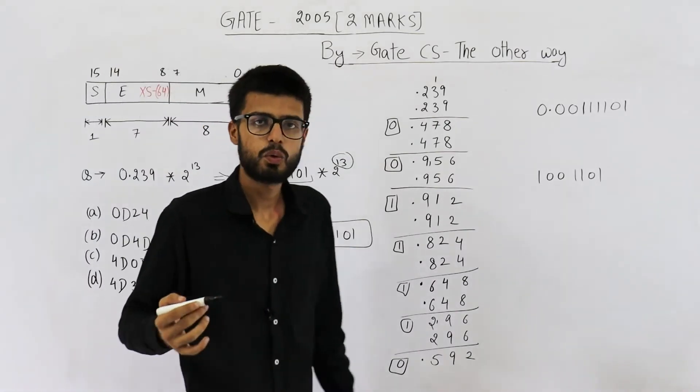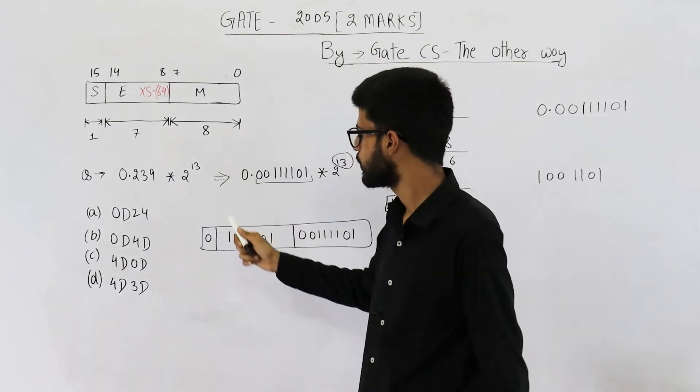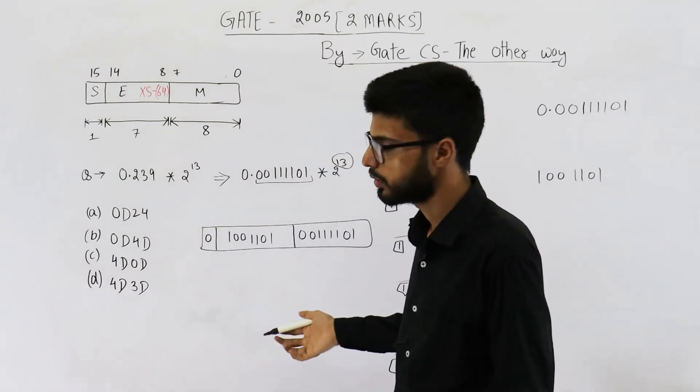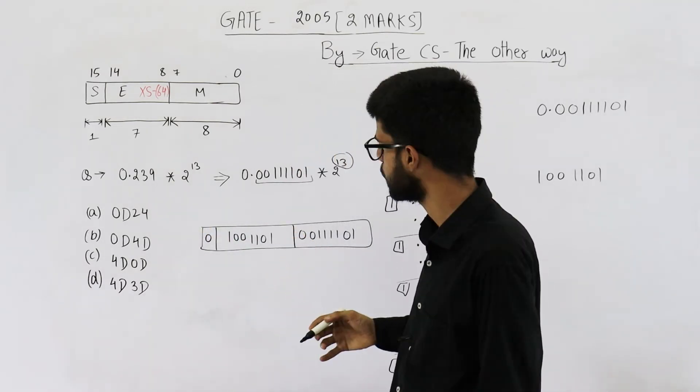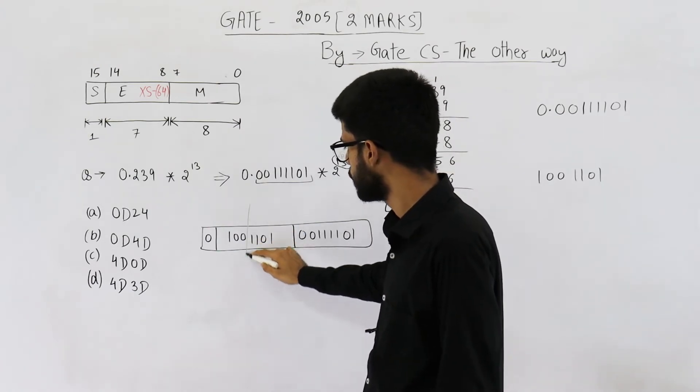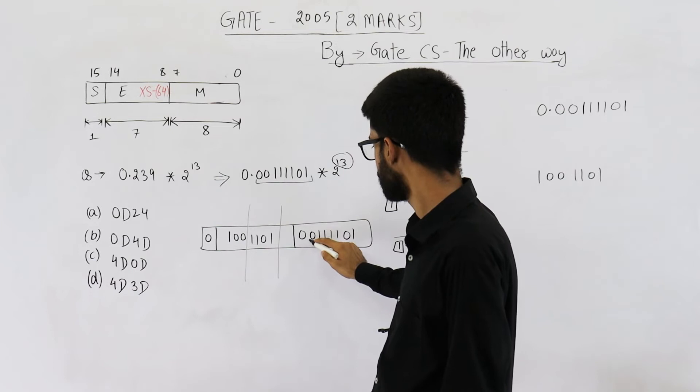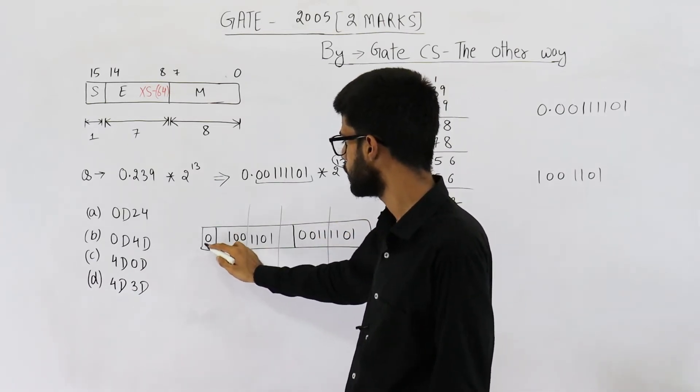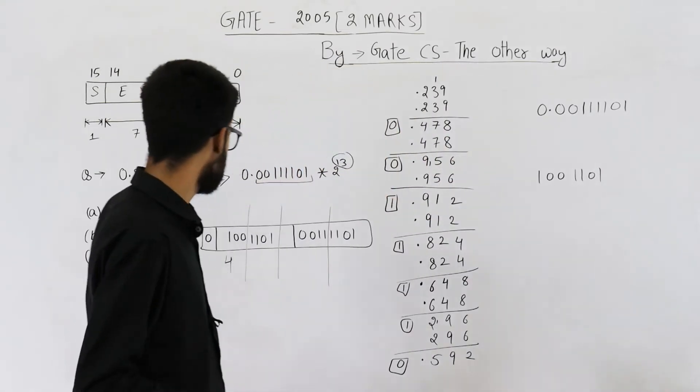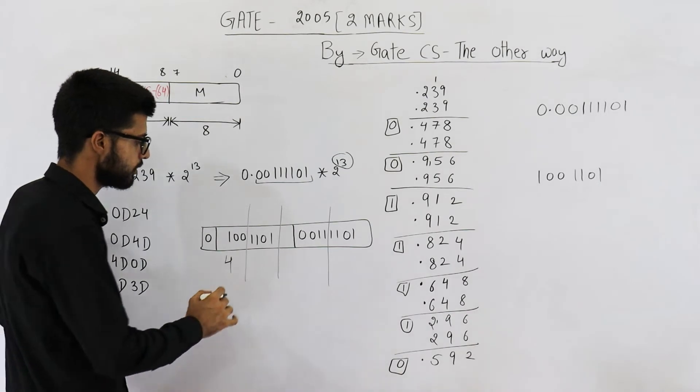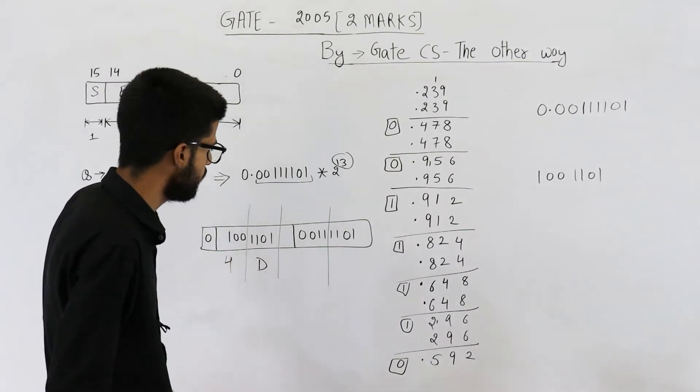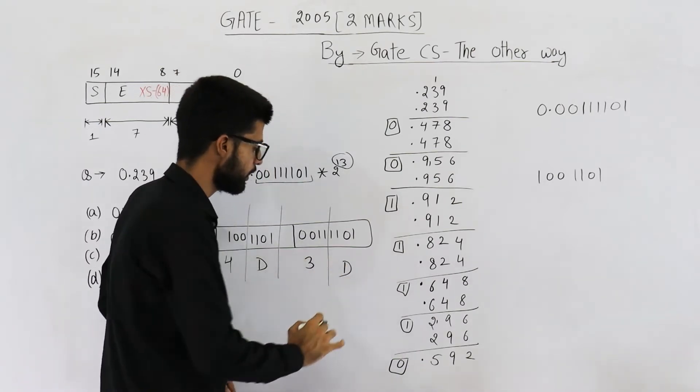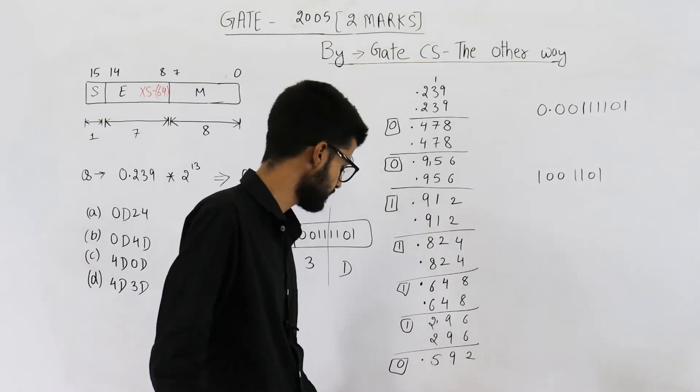Now let us see what is the answer. For the given number, this is the representation that we found out. They are asking us to just convert this number into hexadecimal. Let us do that. So we have 4. See 0100 is 4. After that this is 13. 13 means D. In hexadecimal, 13 is D. This is 3. And this is again D. So our answer is 4D3D.